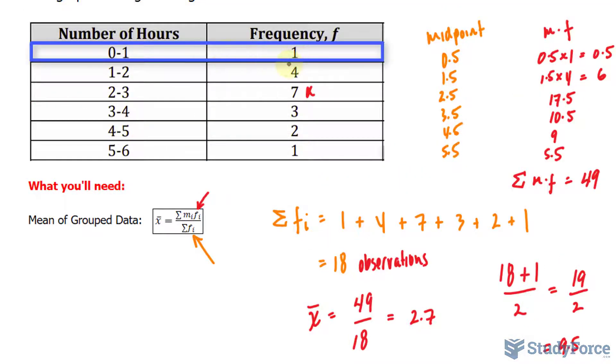The interval that contains the 9.5th observation will tell us information about the median that we're looking for. The frequency from the first row is 1. The cumulative frequency of the first two rows is 5. The cumulative frequency of the first three rows, 5 plus 7, is 12. We've already surpassed the 9.5th observation. So 12 goes beyond the 9th and 10th observation.